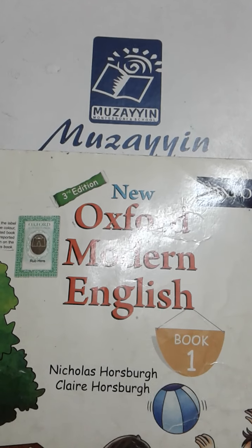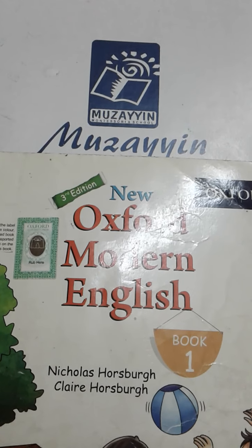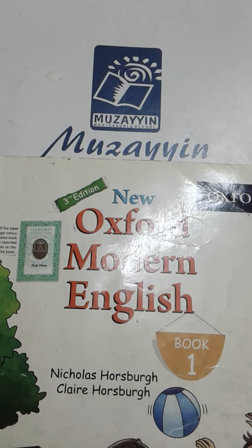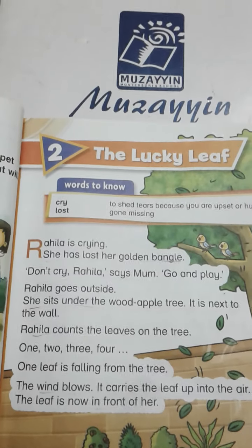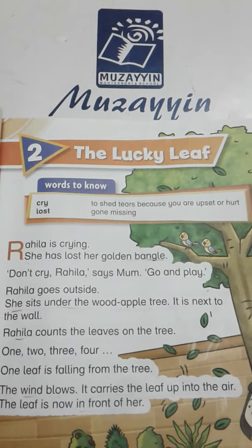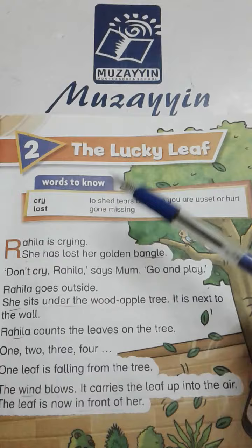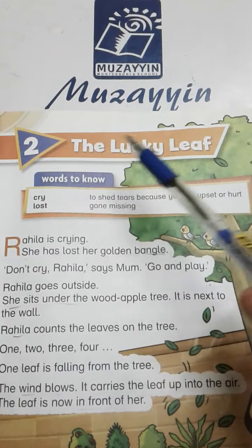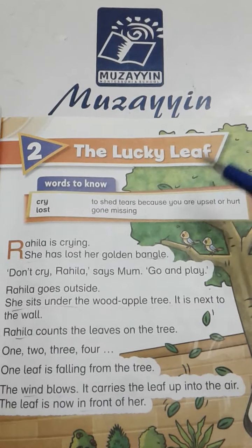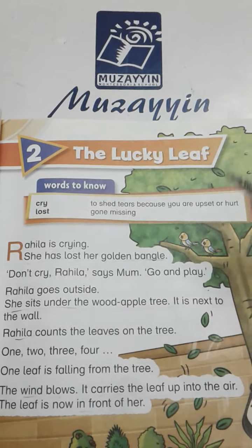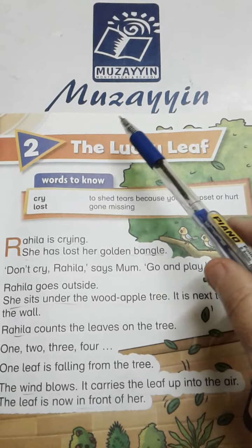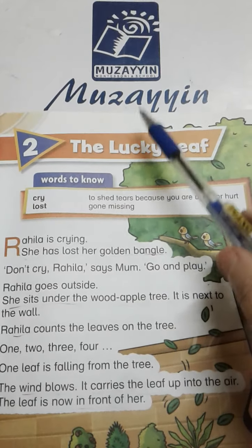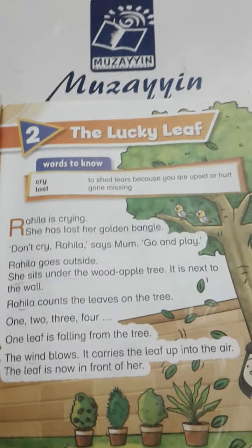Assalamu alaikum and welcome to the English online class of Museean Montessori and School for Grade 1. Students, in today's online class we are going to study Unit Number 2, The Lucky Leaf, and then we will solve its exercise. What you have to do: write date and CW on the top. Let's start reading.